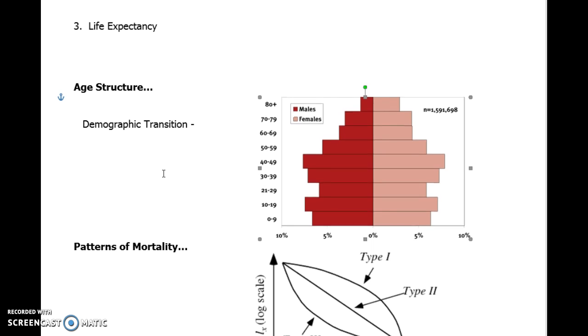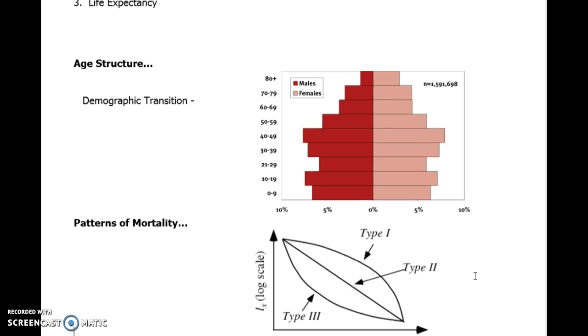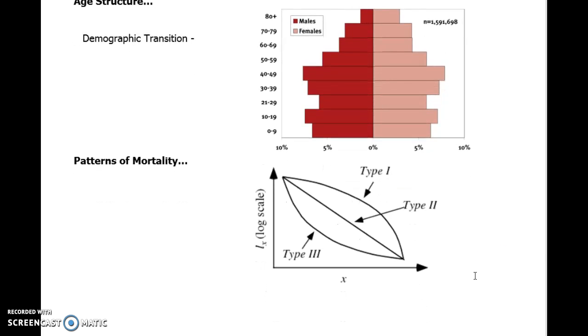Along the lines of birth and death rate, we have patterns of mortality. Different species have different expectations of when or how they might die. The three types are Type 1, Type 2, and Type 3. The x-axis would be the lifespan - for humans it might start at 0 and proceed to about 100, but for a dog it would be completely different. It's just the typical lifespan for that organism.